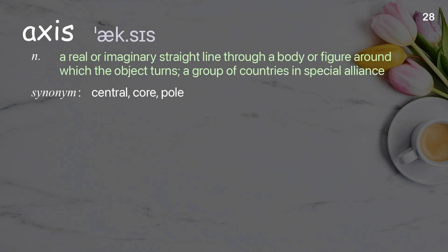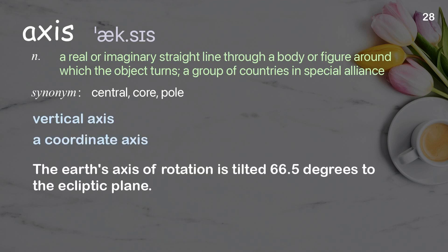Axis: A real or imaginary straight line through a body or figure around which the object turns; a group of countries in special alliance. Examples: Vertical axis. A coordinate axis. The Earth's axis of rotation is tilted 66.5 degrees to the ecliptic plane.